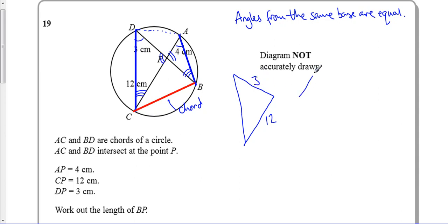And if we draw our other triangle, even though it looks smaller, we actually know that this length here is 4.